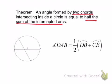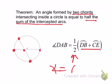Remember, chords go inside the circle. Their endpoints are on the circle, but they don't necessarily have to go through the center. So the theorem says we're going to add the arcs and take half of it. I generally like to write it as: the angle equals the sum of the arcs divided by two.